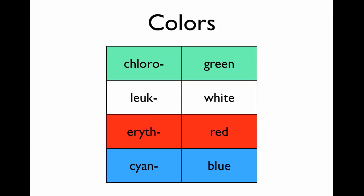We have many prefixes relating to color. Chloro, like in chlorophyll, means green. Leuk means white — you see that in leukocytes. Erythro means red, as in erythrocytes, which are red blood cells. Cyan is the color blue, as in cyanobacteria — the blue-green algae you may have seen in general biology.